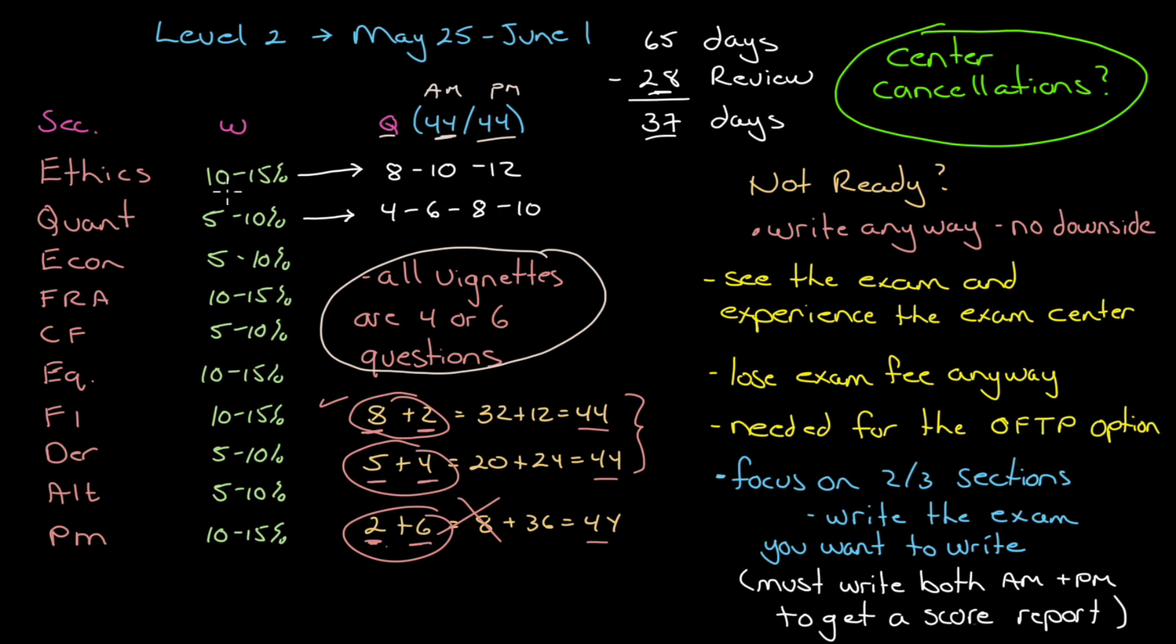So for something like ethics, which is 10 to 15 points, it'll be made up of either eight, 10, or 12 points. There can't be nine points for ethics because vignettes are either four or six points. So there'll be two vignettes of four. There'll be a four and a six or two vignettes of six. And then for the sections that are five to 10, you'll either have one vignette of four, one vignette of six, two vignettes at four questions each, or a four and a six. And all the sections are either 10 or 15 or five or 10. So it gives you some idea of the number of questions you're going to get.